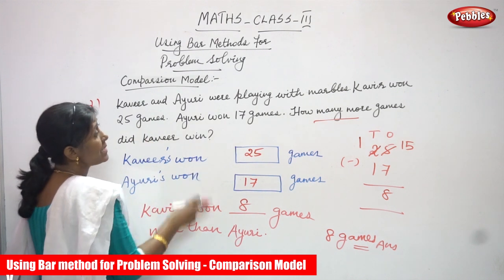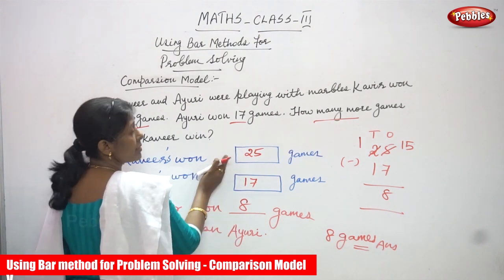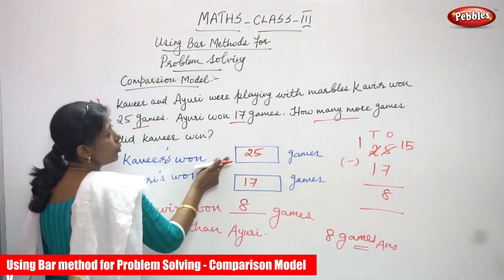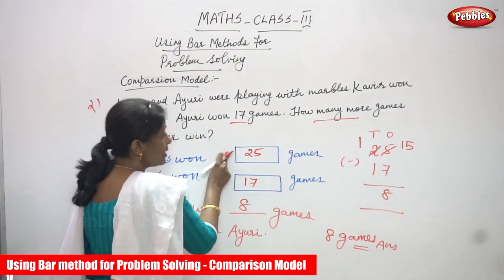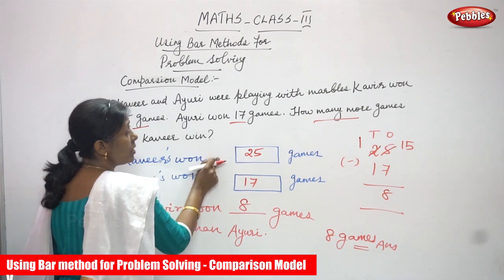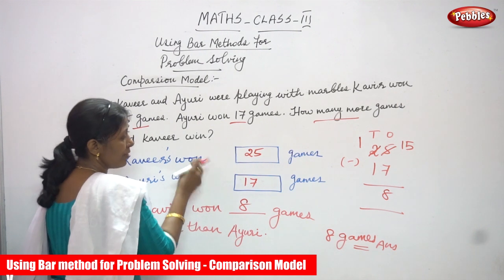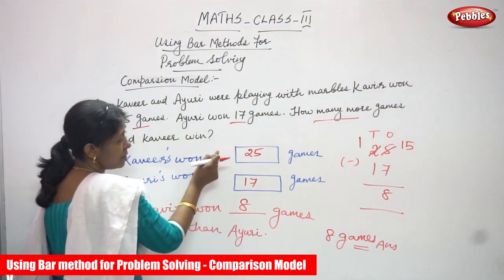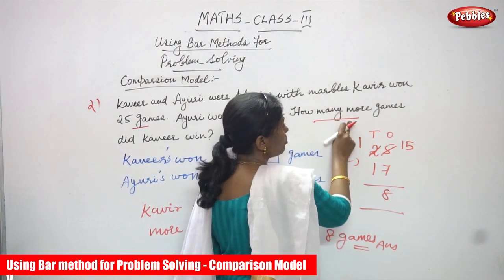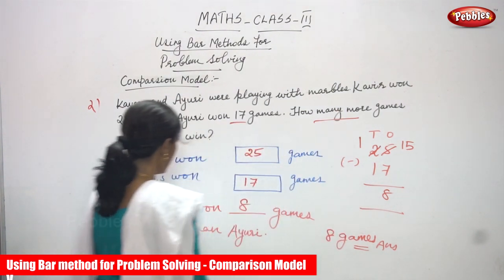To recap: Kaveer and Ayuri were both playing with marbles. Kaveer won 25 games and Ayuri won 17 games. Kaveer is the winner and won more than Ayuri. 'How many more' is a clue word for subtraction, so we subtract and get the answer: 8 games.